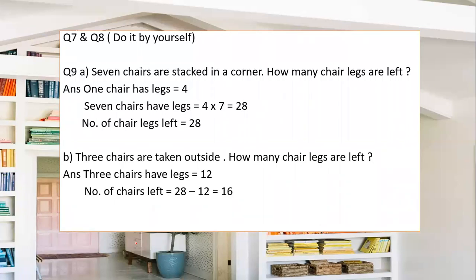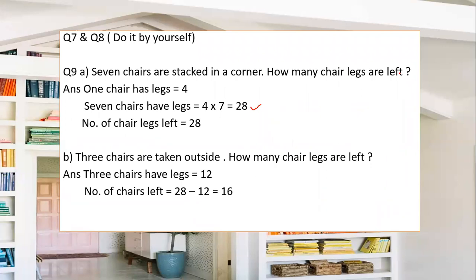Since the topic is about multiples, we have a few word problems. Question number 9: 7 chairs are stacked in a corner — how many chair legs are there? One chair has 4 legs. The question is just about the arrangement of stacked chairs. With 7 chairs, we have 7 × 4 = 28. The number of chair legs is 28.